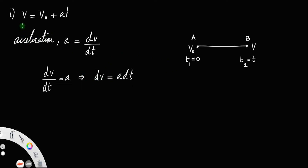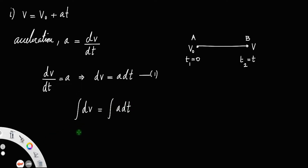We are considering uniform motion, which means acceleration always remains constant. In this kind of motion, for derivation of kinematic equations of motion, we consider acceleration as constant. In order to get the velocity from its change over time, we have to integrate this equation: integral of dv is equal to integral of a dt. Since a is a constant, we can take it out: a times integral of dt. Now we have to put the limits — time varies from 0 to t.